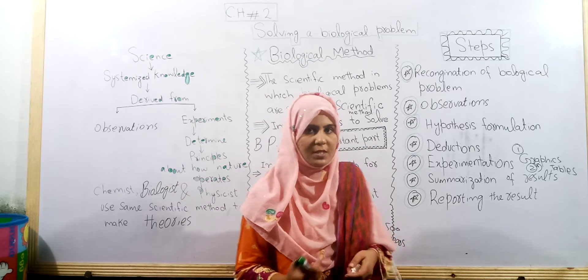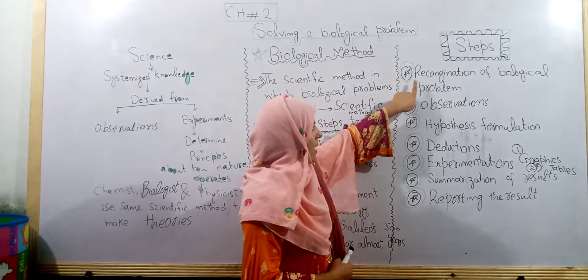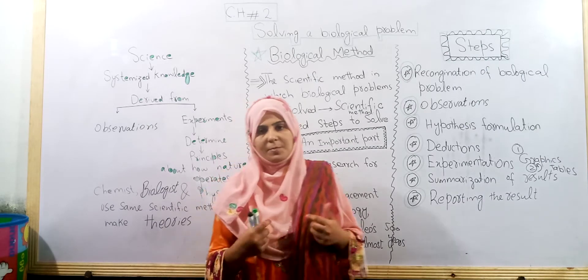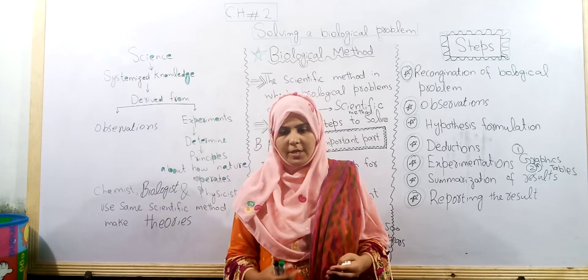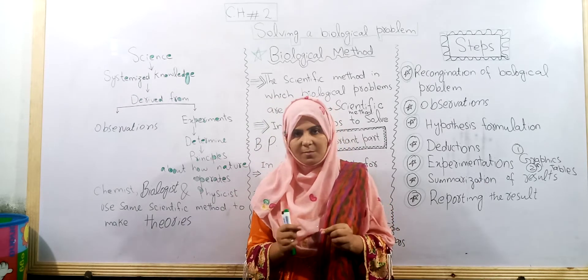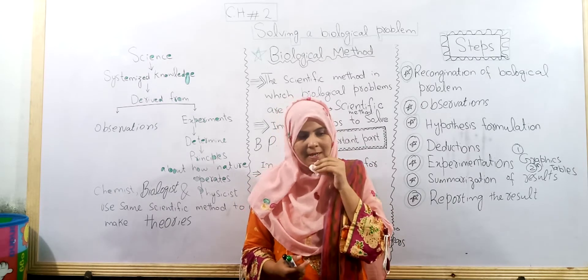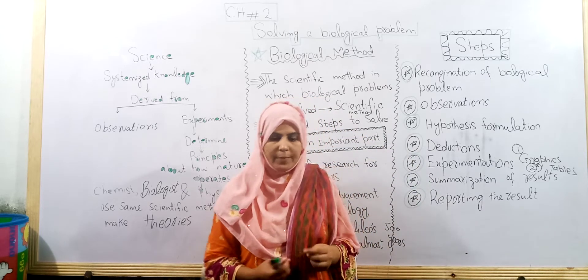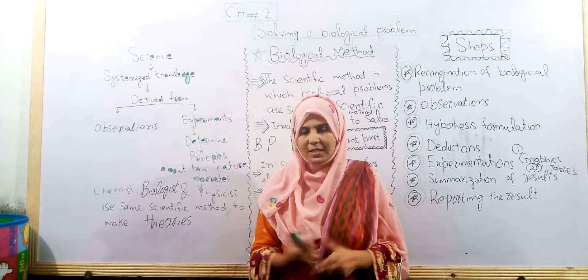In different fields, it is used. If we talk about steps, let us talk about the steps. The first step is recognition of biological problems. This means identifying biological problems. Some scientists are working on organisms, on small organisms, and some scientists are working on the internal structure of animals or plants. So the topic of our field is to choose and identify the biological problem.